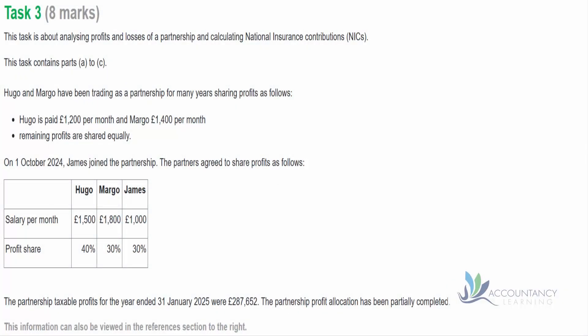This is task three from the second sample assessment for business tax. This task is about analyzing profits and losses of a partnership and calculating national insurance contributions.